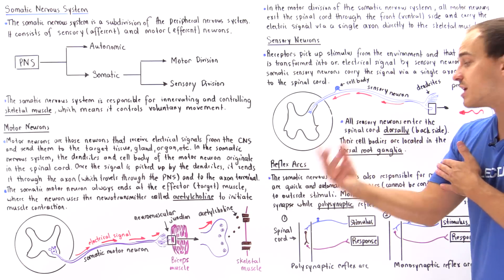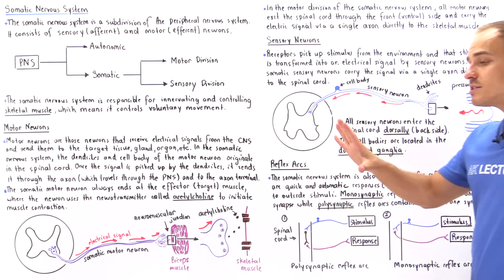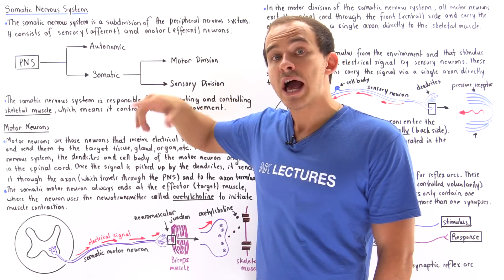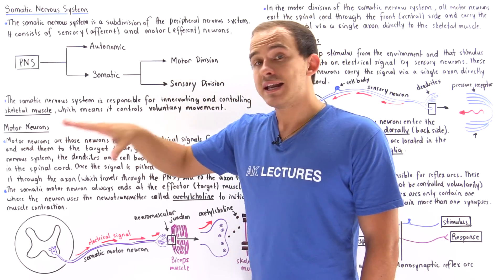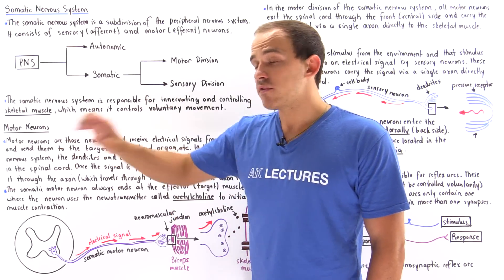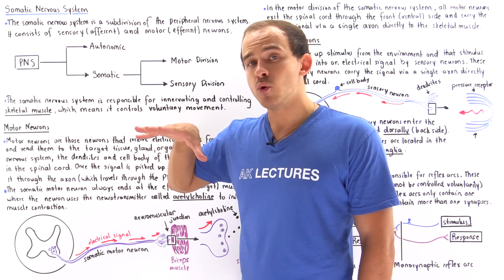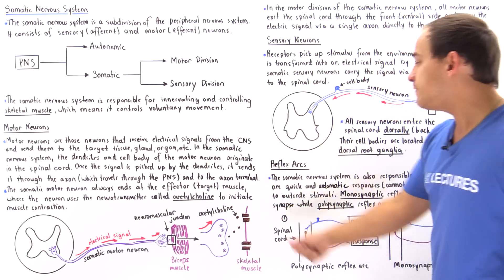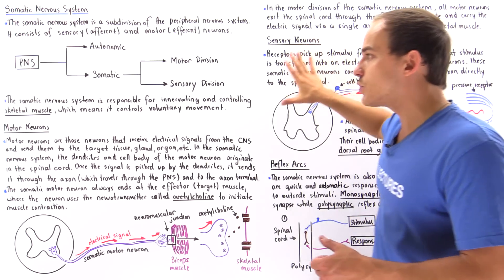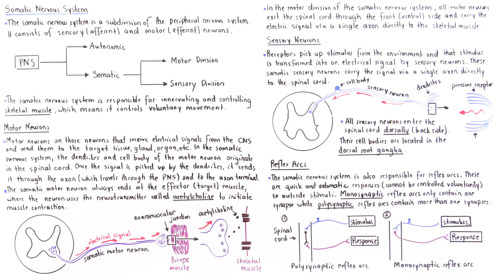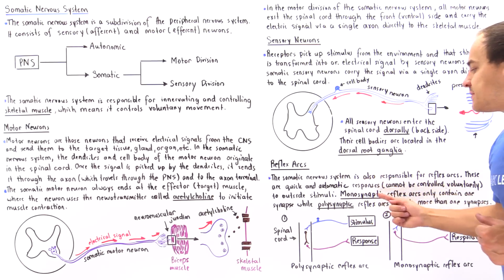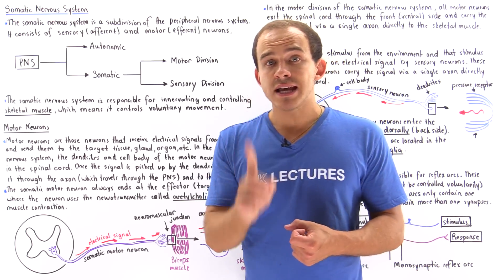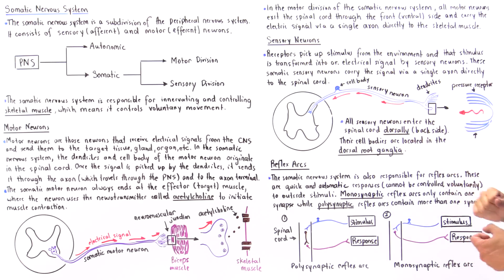Reflex arcs are quick and automatic responses resulting from outside stimuli that cannot be voluntarily controlled. For example, if I place my hand on a hot stove, my hand will automatically move away even before I consciously feel it — I have no control over that automatic movement. The somatic nervous system controls this reflex arc, involving both sensory and motor neurons. There are two types of reflex arcs: monosynaptic, meaning a single synapse between the motor and sensory neuron, and polysynaptic, meaning more than one synapse.